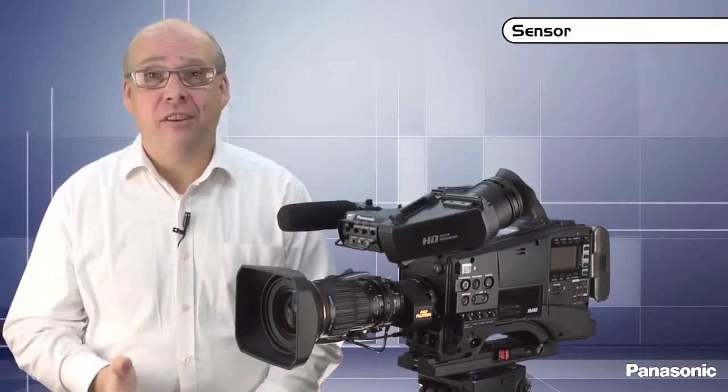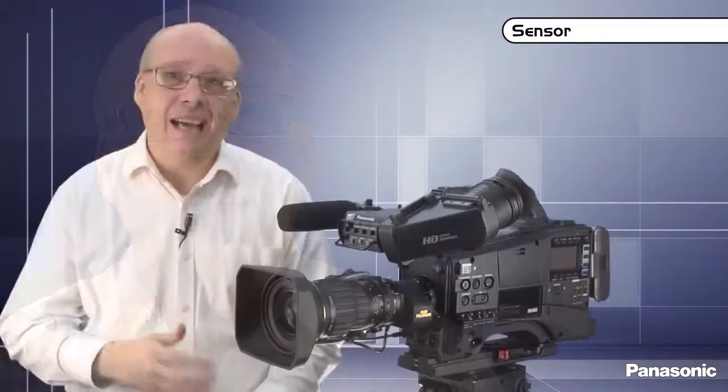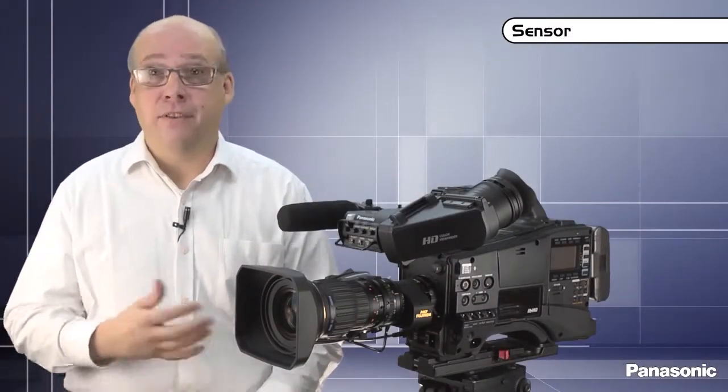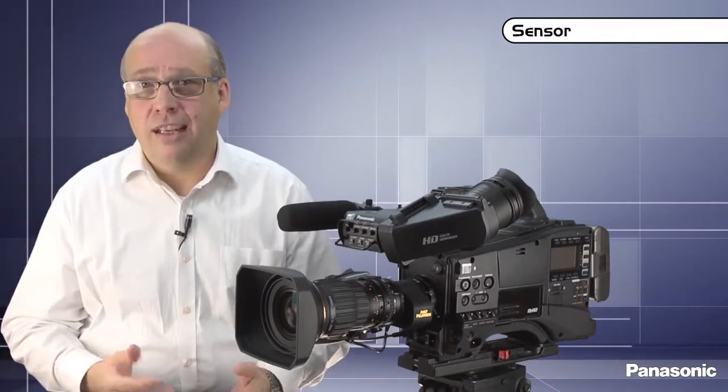The single sensor has another advantage. The prism filter used to separate the primary colors has been removed. And as a result, the optical defects have disappeared, flare and attenuation. Let's have a look at the main innovations linked to the two-third type single MOS sensor.